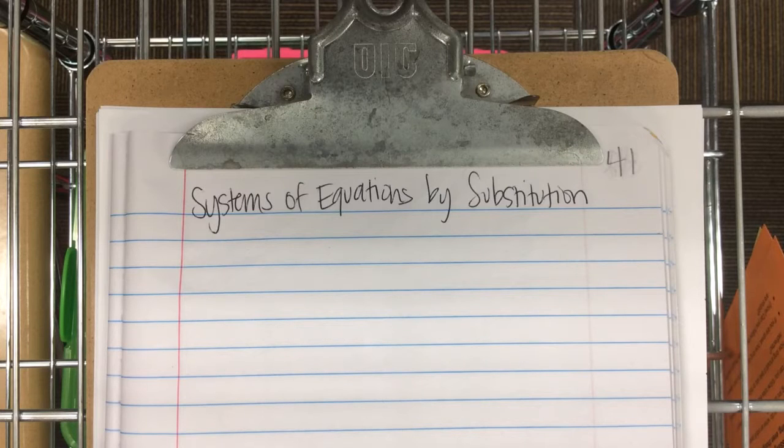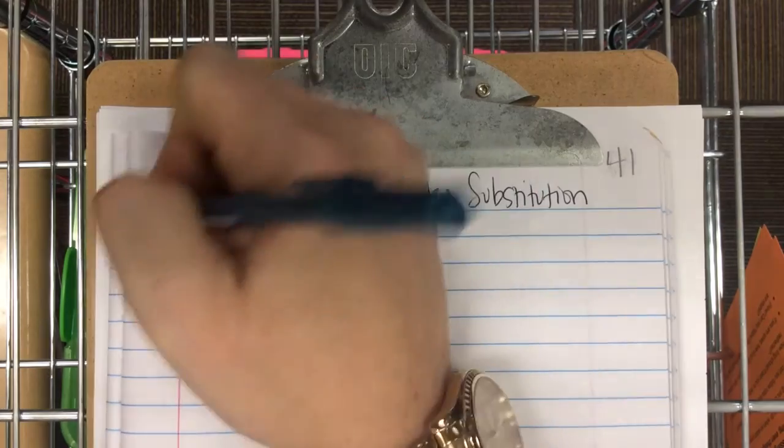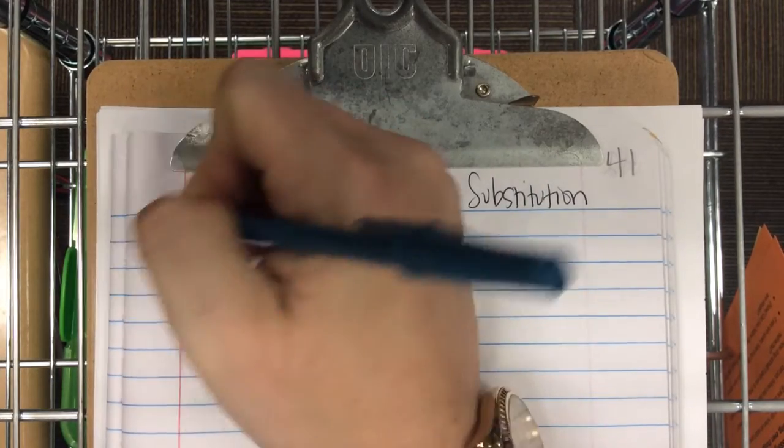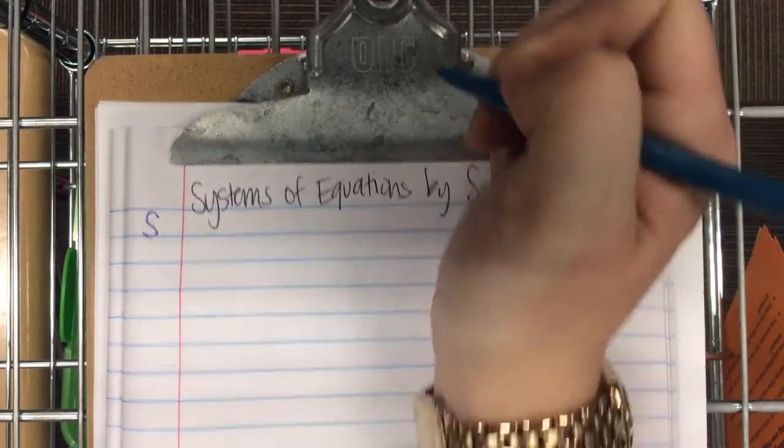And again, the reason we may use substitution is because you may get a fractional answer, right? You don't want to graph and then all of a sudden have to count your ordered pair and it's like four and one-third. You're not going to be accurate if you have to count that on a graph. So, systems by substitution typically eliminates that stress level or that stressor.